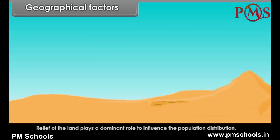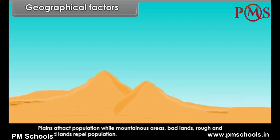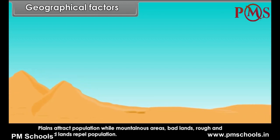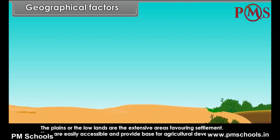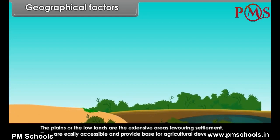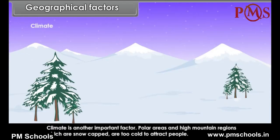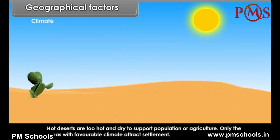Geographical Factors: Relief of the land plays a dominant role in influencing population distribution. Plains attract population while mountainous areas, bad lands, and rough and rugged lands repel population. Plains are easily accessible and provide a base for agricultural development. Climate is another important factor. Polar areas and high mountain regions are too cold to attract people, and agriculture is not possible there. Hot deserts are too hot and dry to support population or agriculture.